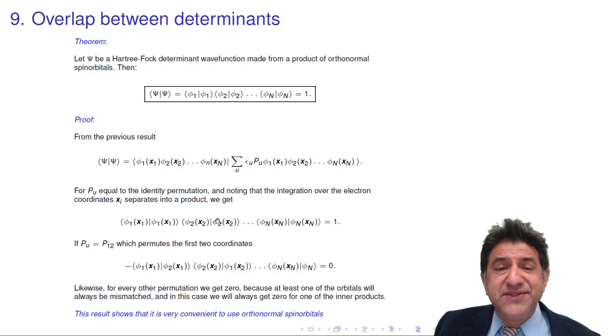Well, if there's anything that this theorem shows, it shows that it's very convenient to use molecular orbitals which are orthonormal, which have this property of orthogonality and normalization. See you later. Bye.